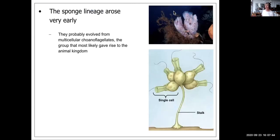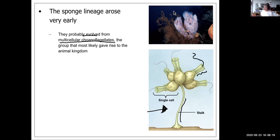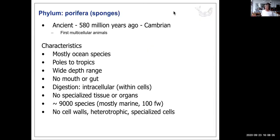Sponges are a very early lineage of Animalia. They probably evolved from multicellular choanoflagellates — the group most likely to have given rise to the animal kingdom. A choanoflagellate colony has a stalk and a collar with a flagellum facing outward that sweeps food into a trumpet-like cylinder, which transfers into the cell itself.